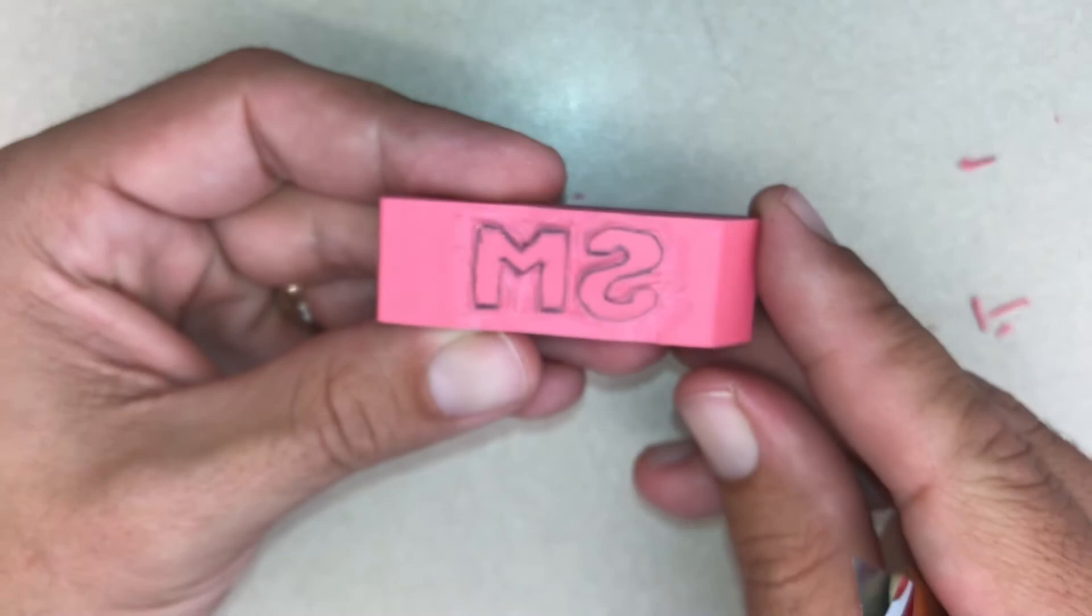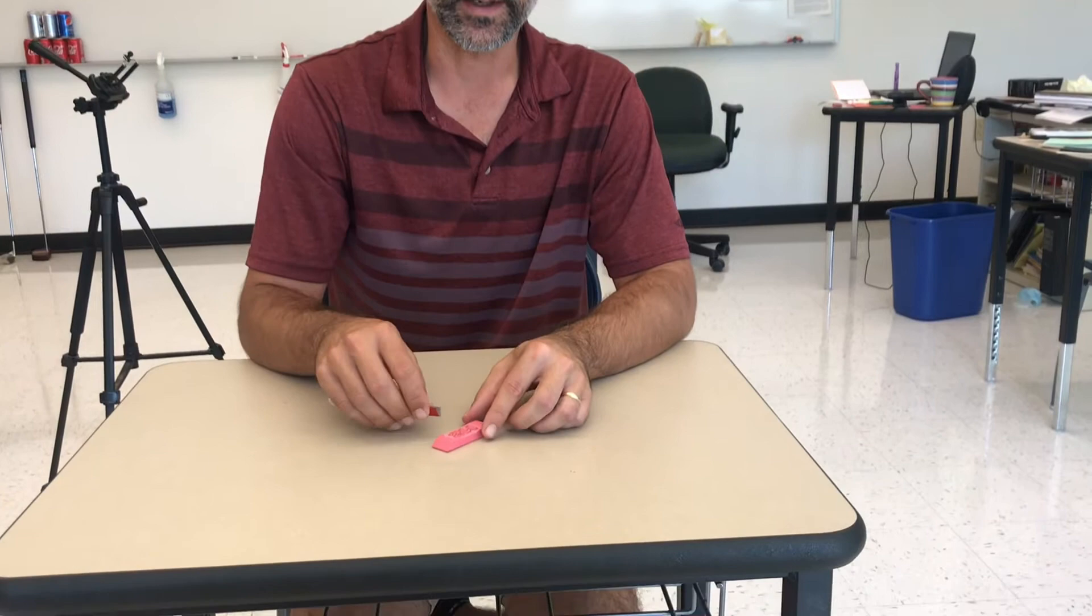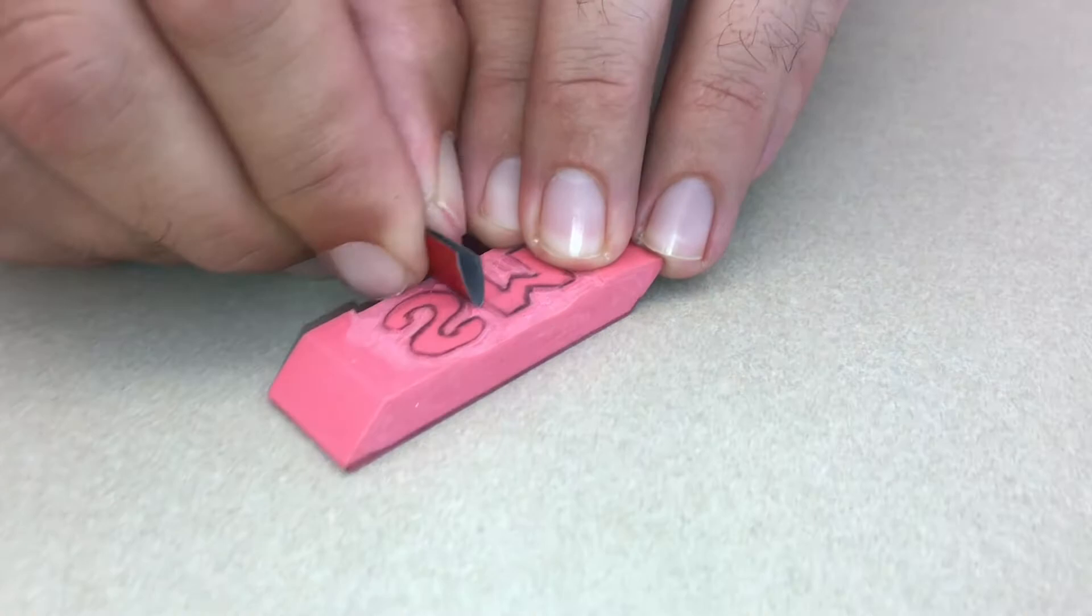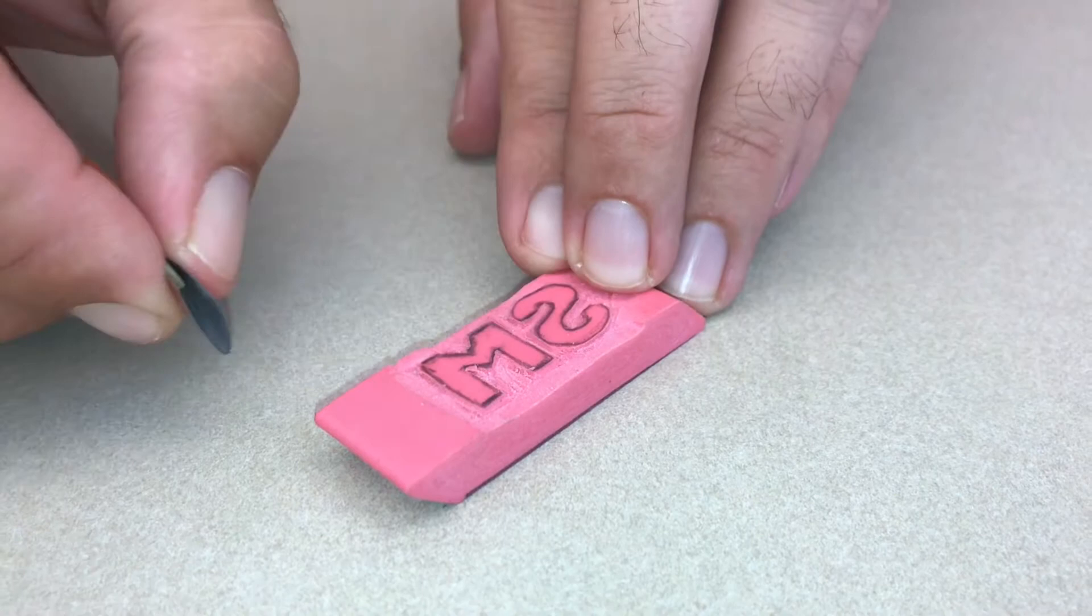When you're using the gouge, make sure that you always cut by pushing away from your body and your fingers. So if I'm making a cut on this M here, I don't want to push towards my finger, because it can jump and hit the end of my finger and cut it. So I'll cut halfway through pushing this way, and then I'll turn it around and cut the other half going that way. And that way I never come close to cutting my fingers.